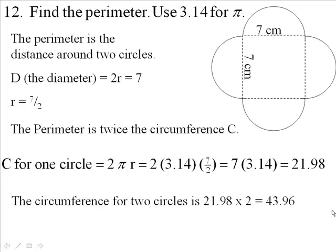If I double that, I'm going to get the perimeter of both circles. I'm going to get the circumference of both circles, and that's going to be the total perimeter of this figure here. 43.96 centimeters.